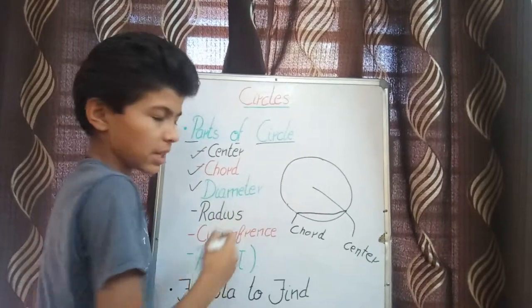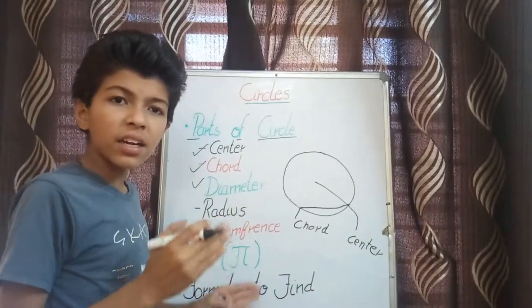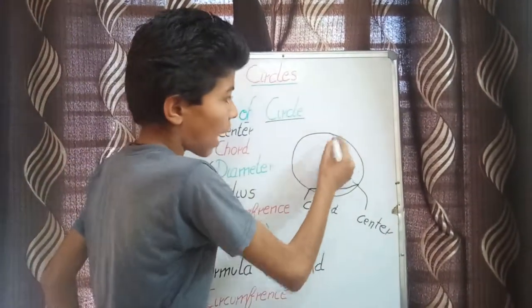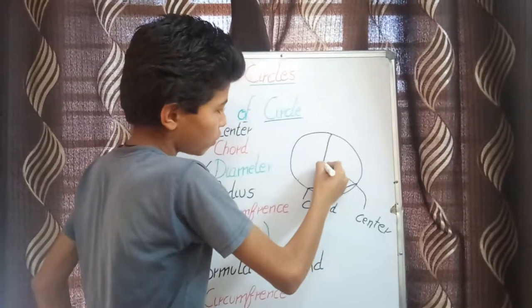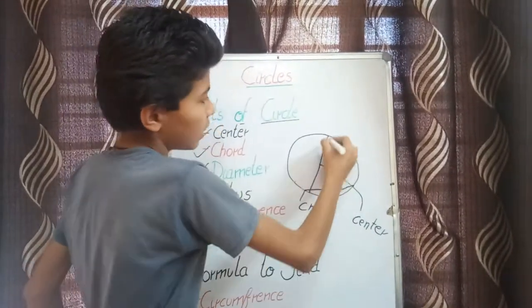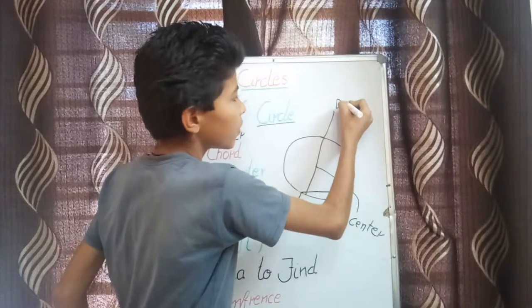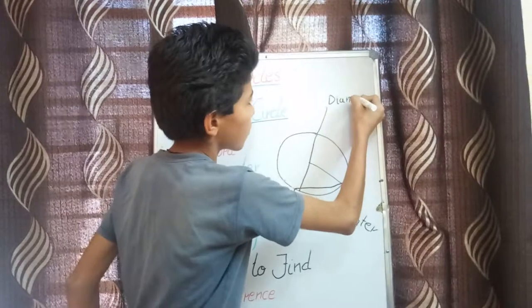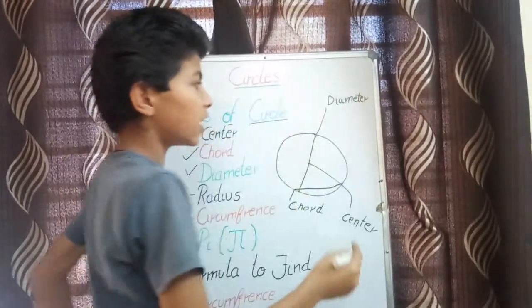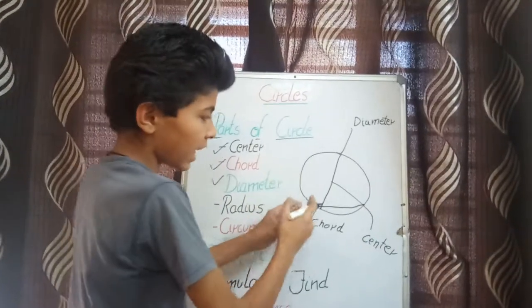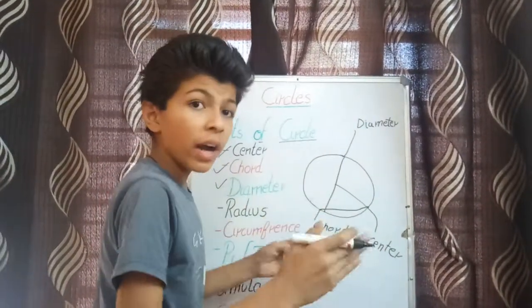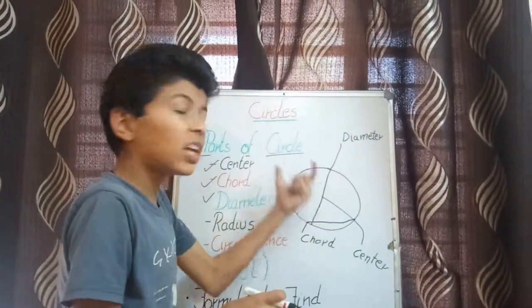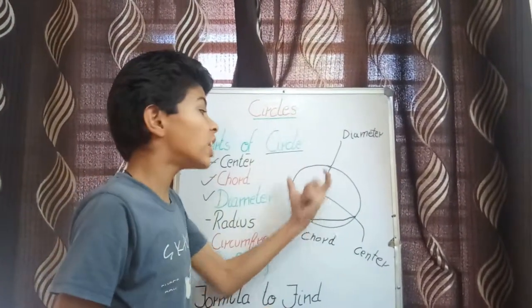Now we have the diameter. What is a diameter? A diameter is a chord which passes through the center. This line goes through the center and connects two points on the circle — this is called the diameter. We say it is a chord because it connects two points on the circle, and it is the longest chord of a circle.